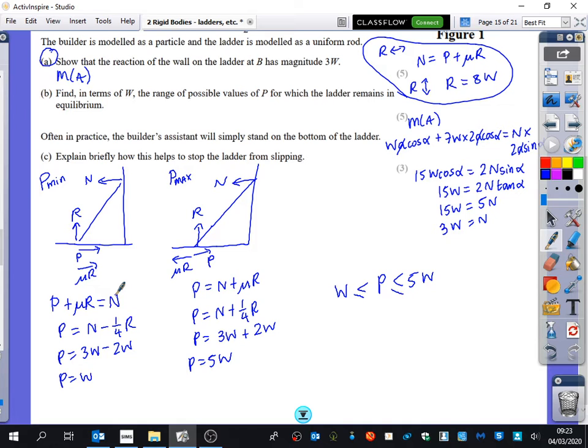It then says, often in practice, oh, by the way, I forgot, these should have said seven W here, shouldn't they? And they also should have said W here and here. Often in practice, the builder's assistant will simply stand on the bottom of the ladder. Explain briefly how this helps to stop the ladder from slipping.